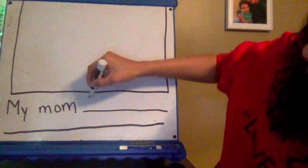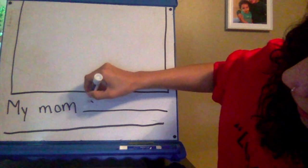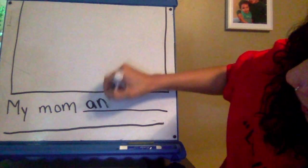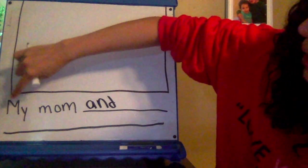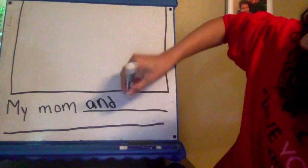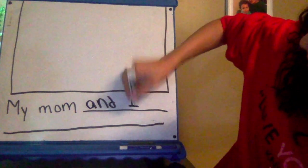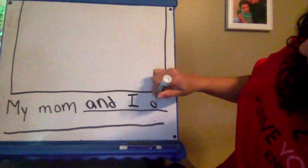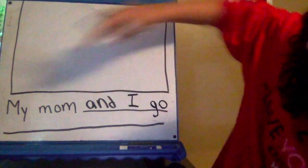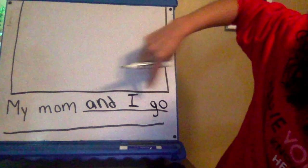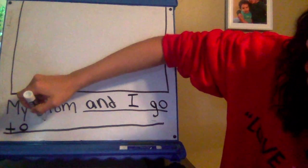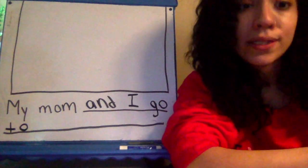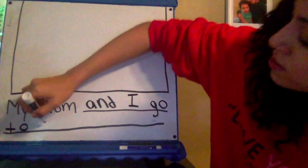So my mom and, A-N-D. Remember a good strategy is to go back and reread. My mom and I go. G-O. Go. My mom and I go to, finger space. Starbucks. Now that's a long word. It's not a treasure box word. So Starbucks.